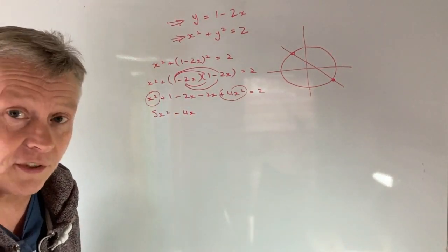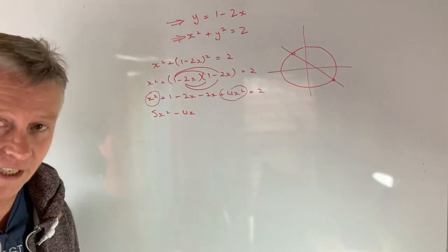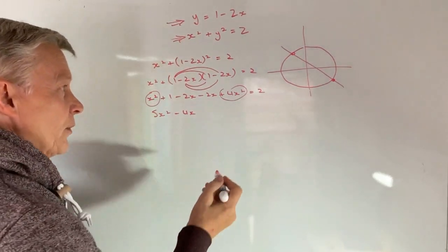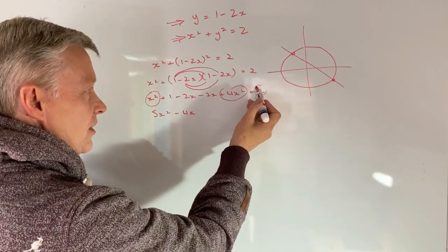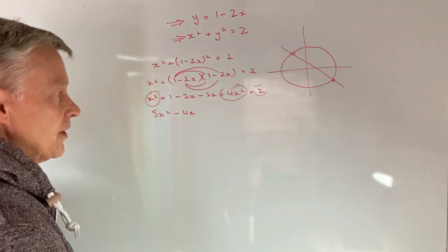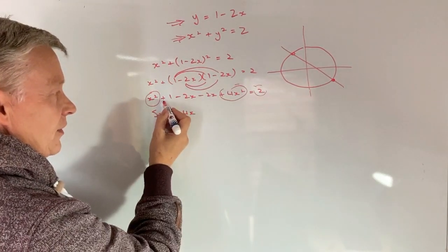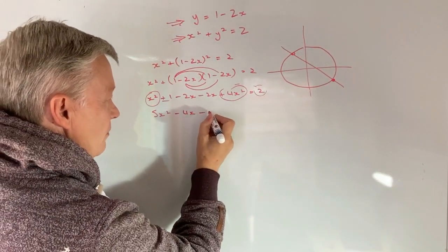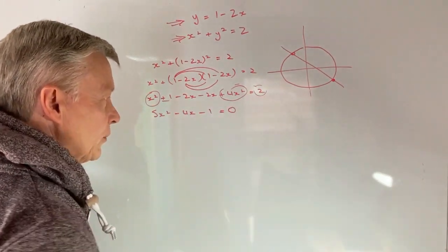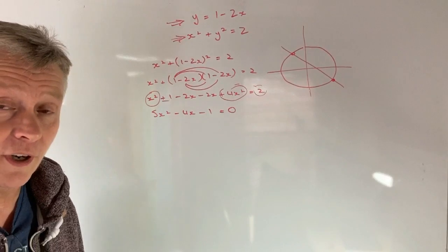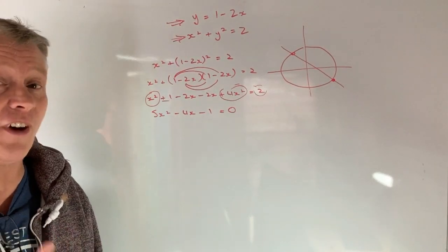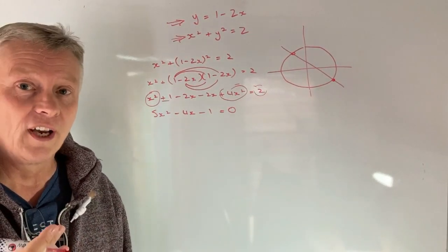Now, don't forget that when you're factorizing, you need to make sure that it's equal to 0. So what I have to do is I bring this 2 over into the equation and that's going to be minus 2. So I've got plus 1 minus 2 is going to be minus 1 and that all equals 0. So now we've got an equation that we can actually factorize for x.